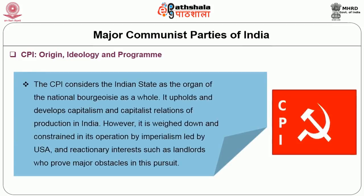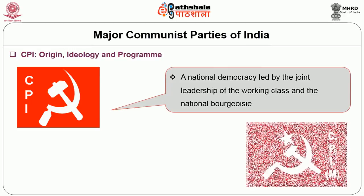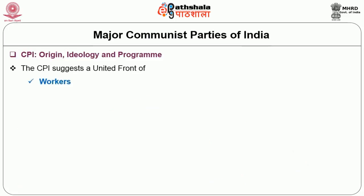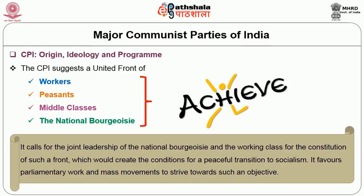The CPI considers the Indian state as the organ of the national bourgeoisie as a whole, which upholds and develops capitalism and capitalist relations of production in India. However, it is weighed down and constrained by imperialism led by the US and reactionary interests such as landlords, who prove major obstacles in this pursuit. The CPI argues for a national democracy led by the joint leadership of the working class and the national bourgeoisie, while CPIM argues for a people's democracy led by the working class and supported by the peasantry, petty bourgeoisie, and national bourgeoisie. The CPI suggests a front of workers, peasants, middle classes, and the national bourgeoisie, calling for a peaceful transition to socialism, and favors parliamentary work and mass movements to strive towards this objective.